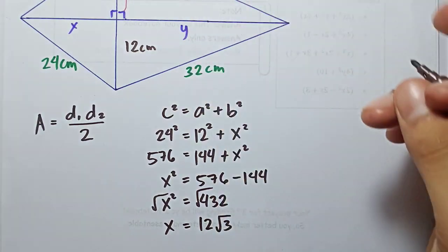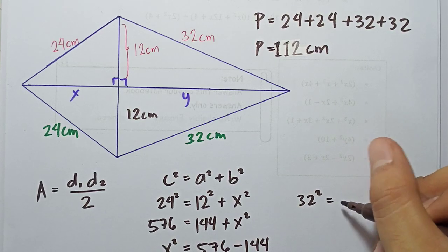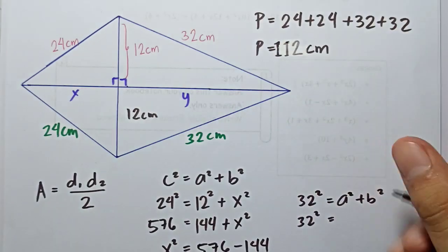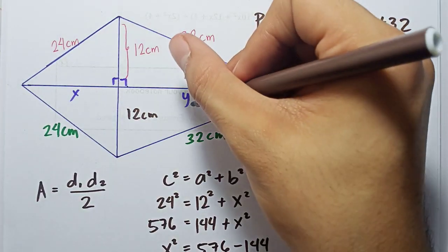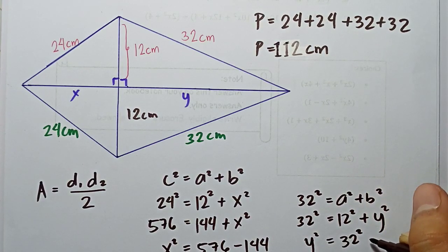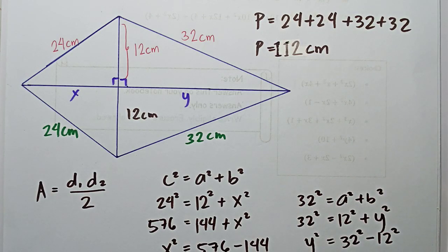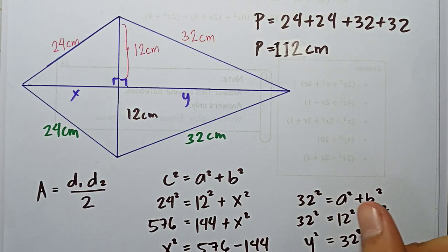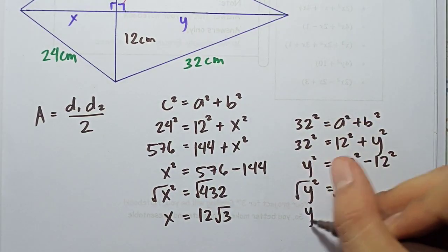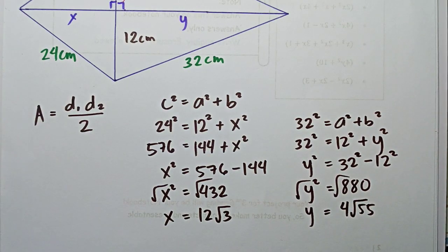Now let's find y. The longest side this time is 32, so: 32² = 12² + y². Rearranging: y² = 32² − 12² = 880. Taking the square root: y = 4√55.